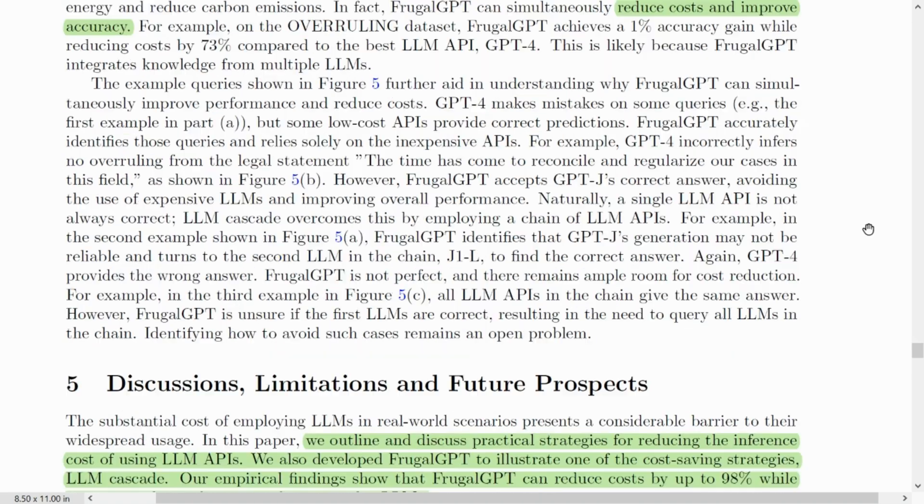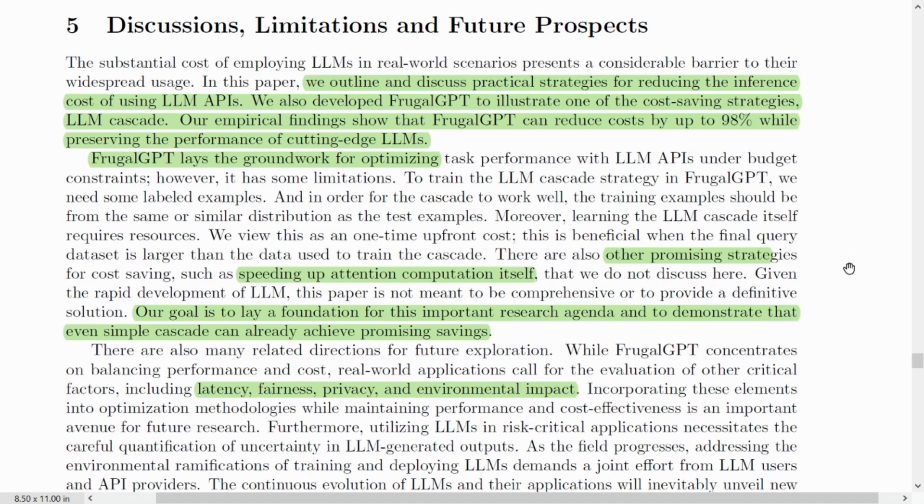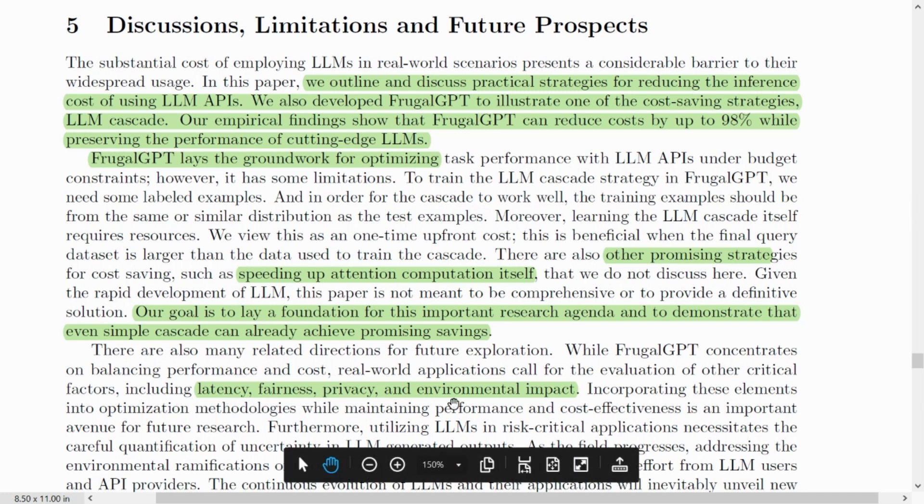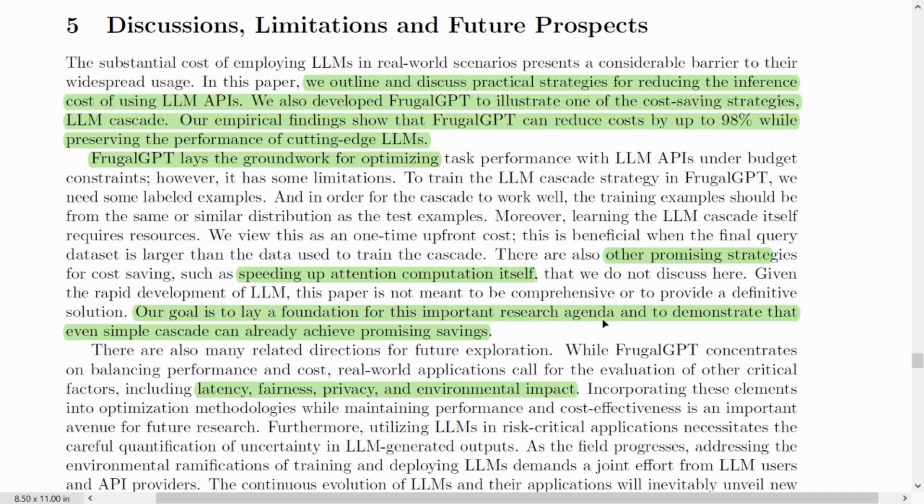Everything comes with its own benefits and there are always limitations that will definitely be there for any new technology. However, this technology is improving and we will see more of such technologies in the future. But talking about this technology, there are certain limitations. For example, latency, fairness, privacy and environmental impact has not been talked about. There are other promising strategies such as speeding up attention computation itself. But the goal of this paper was to lay a foundation for this important research and I thank the authors for that because it provided us a way to think about a way to move forward to continue with our research and design better things with reduced cost and improved accuracy.